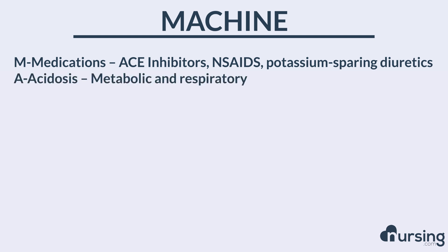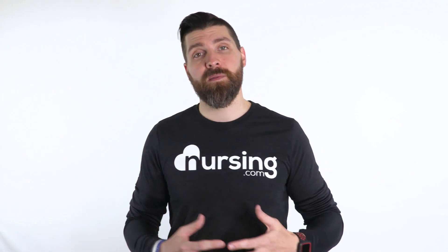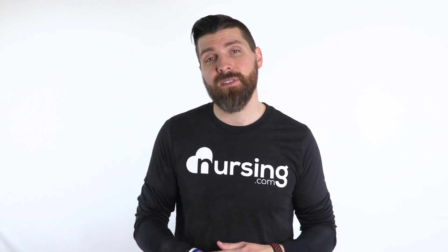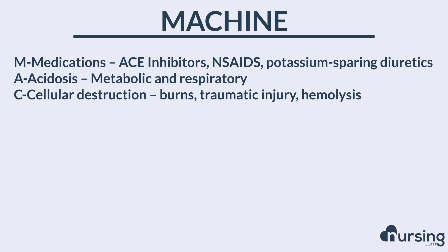A stands for acidosis. Anytime there's acidosis, whether it be metabolic or respiratory, these can lead to changes in potassium and result in an increase in potassium in the blood.